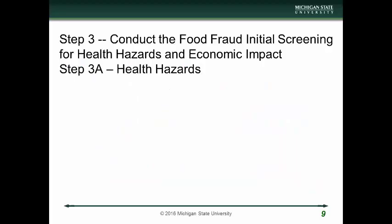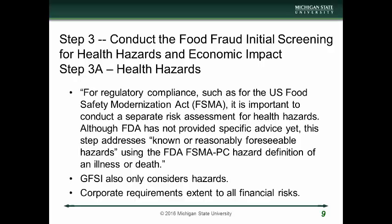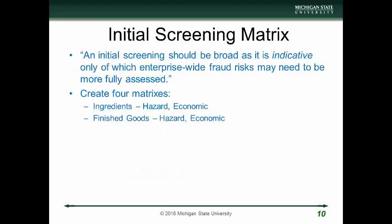Step three is to conduct the food fraud initial screening for health hazards and economic impact. The first is health hazards for regulatory compliance, such as for the U.S. Food Safety Modernization Act. It's important to conduct a separate risk assessment for health hazards. Although FDA has not provided specific advice yet, this step addresses known or reasonably foreseeable hazards using the FSMA preventive controls hazard definition of an illness or death. GFSI technically only considers hazards as well, but the enterprise risk management systems or corporations themselves would need to assess this in terms of financial impact as well. Corporate requirements extend to all financial risks. An initial screening should be as broad as it is indicative only of which enterprise fraud risks may need to be more fully assessed.